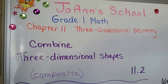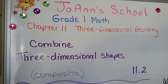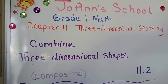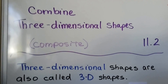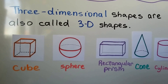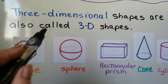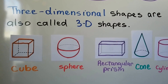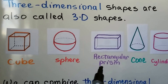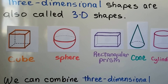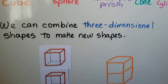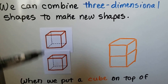Combine three-dimensional shapes — lesson 11.2. When we combine three-dimensional shapes they're also called composite shapes. Three-dimensional shapes are also called 3D shapes — the 3 for the number and D for dimensional. We've been learning about the cube, the sphere, the rectangular prism, the cone, and the cylinder. We can combine three-dimensional shapes to make new shapes.